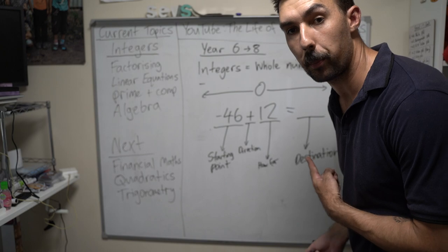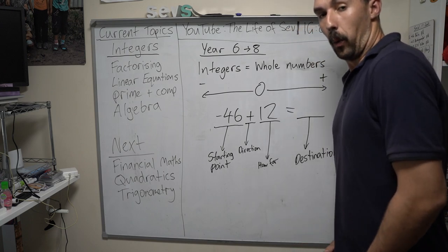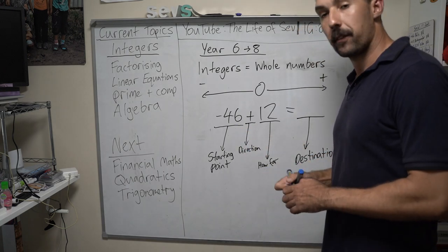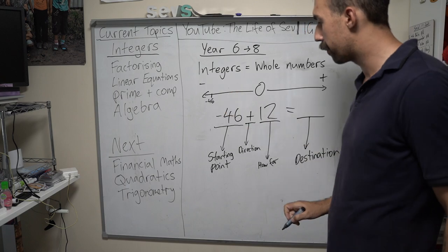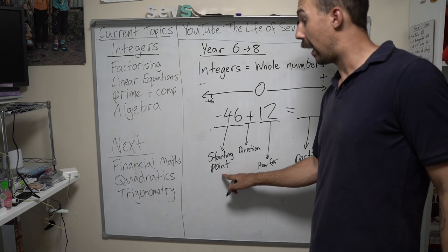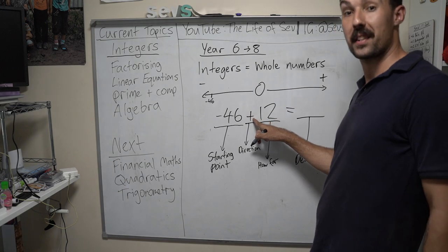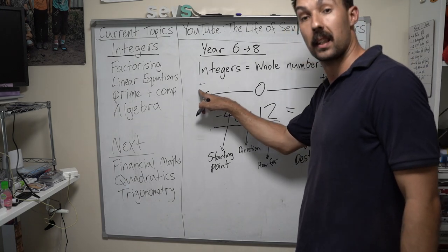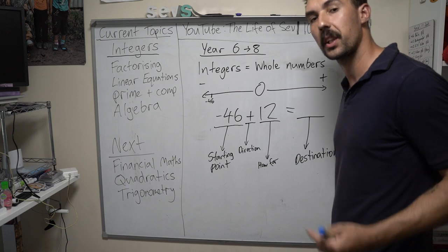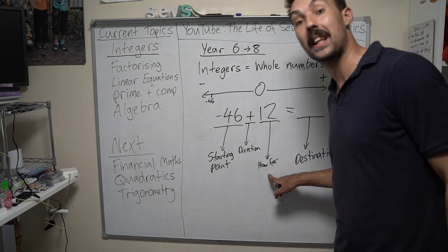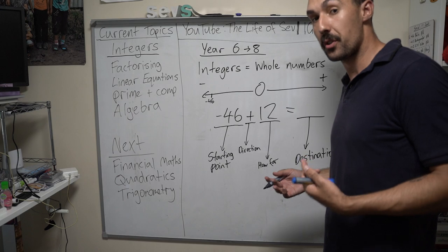There's your first bit of notes — feel free to screenshot it, but I'd rather you copy it down so you remember. We're going to start at negative 46, so that's our starting point on the number line. Now we're going to plus — the direction is plus. So which way is the direction going to go, left or right? Left is minus, right is plus. So we're going to go right.